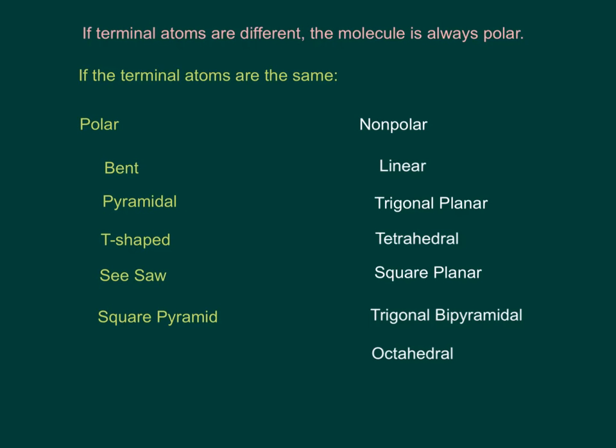So that was a little overwhelming and fast, so here's a summary for you. If the terminal atoms are different, the molecule is always polar. So the central atom is the atom in the middle, and the terminal atoms are all the atoms that are attached to the middle atom. If they are different, the molecule is always polar. If the atoms are different, then they can't cancel out, and it's always polar.